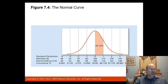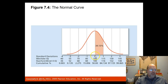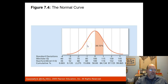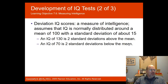Most intelligence tests show a normal curve — also called a bell curve. The median is at zero, and one standard deviation covers 34% of respondents on each side, so a majority of students score within two standard deviations. Deviation IQ scores assume IQ is normally distributed around a mean of 100 with a standard deviation of about 15.